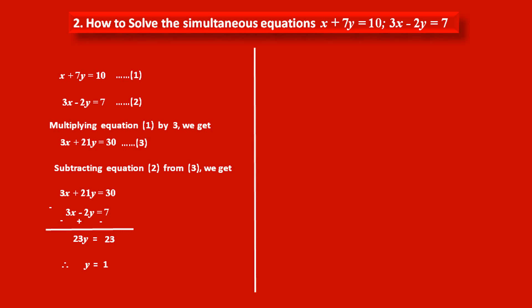Now, to find the value of the other variable x, substituting y equals 1 in equation 1. As equation 1 is the simplest equation, we get x plus 7 times the value of y, that is 1, equals 10.